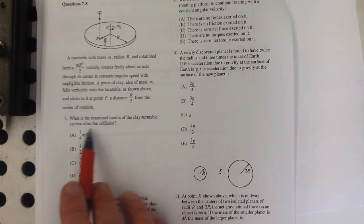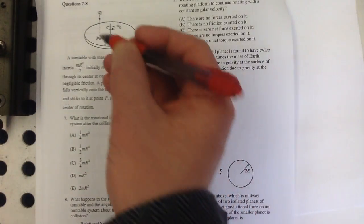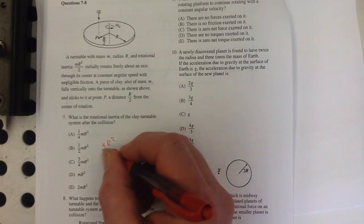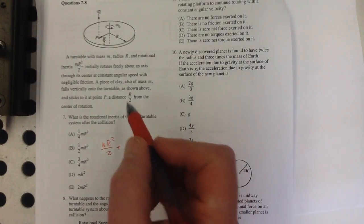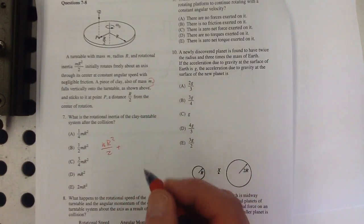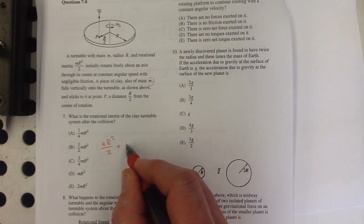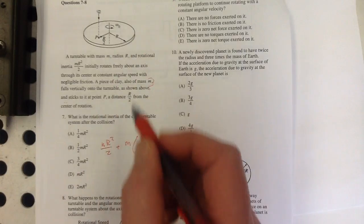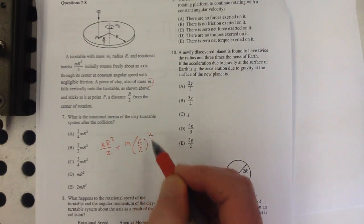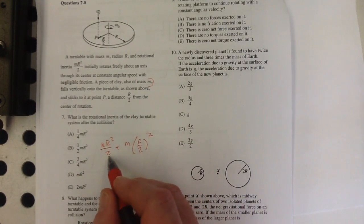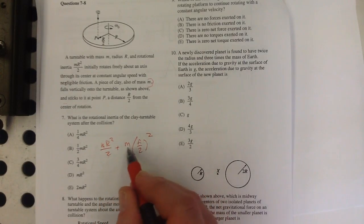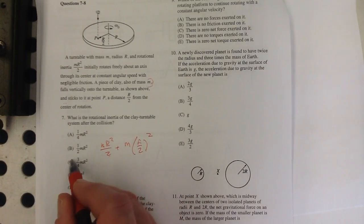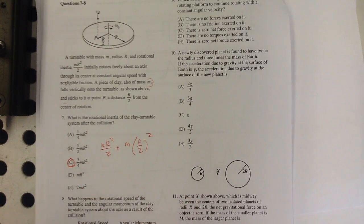The rotational inertia of the clay turntable system after. Well, I just have to add the m r squared for that. So I have m r squared over two, plus a piece of clay also of mass m. So that has m times its radius where it's at, which is r over two squared. So I have m r squared over two, plus m r squared over four. A half of m r squared plus a quarter of an m r squared is three quarters of an m r squared.